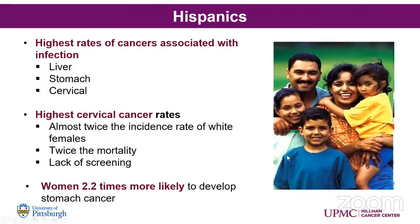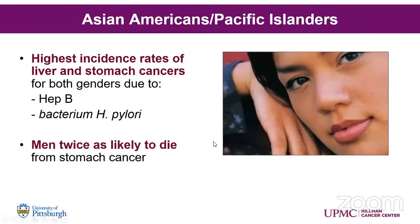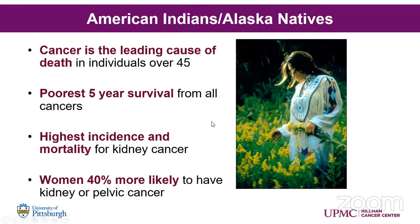Hispanics have the highest rates of cancers associated with infection, including cervical cancer. Asian Americans and Pacific Islanders have the highest rates of cancers of the liver and stomach, and men are twice as likely to die from stomach cancer than any other group. American Indians and Alaska Natives — cancer is the leading cause of death in individuals over 45, and they have the poorest five-year survival.